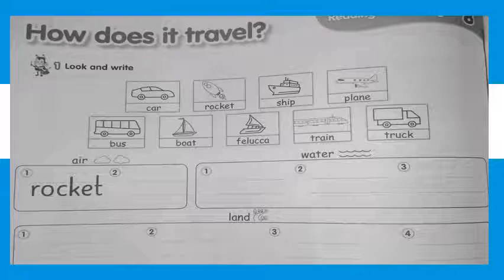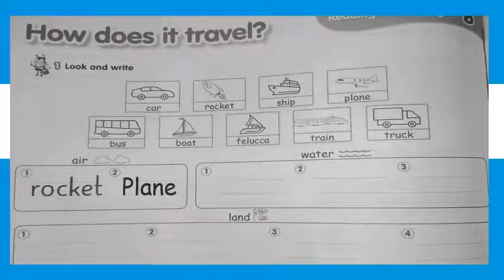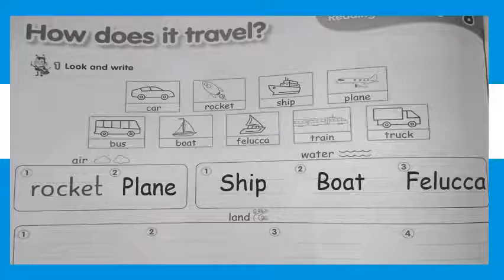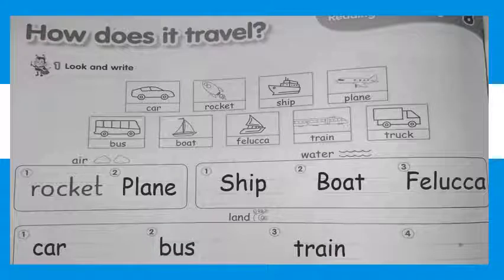Which of these fly in the air? The rocket and a plane. Which of these travel on water? Ship. What else? Boats? And a felucca. Excellent! What about land? Which of these travel on land? Car, bus, train, and a truck.